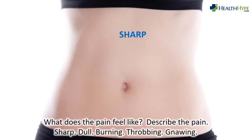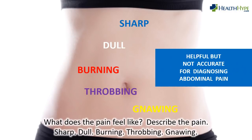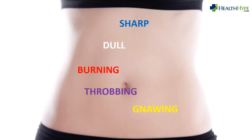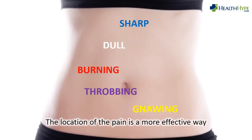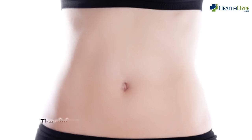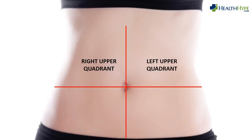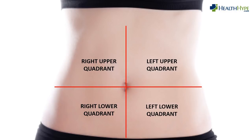We describe it in many ways using terms such as sharp, dull, burning, throbbing, and gnawing. However, trying to find the cause in this way is not very reliable or accurate. A more effective way to identify the possible cause of the pain is to isolate where the pain is located. The abdomen can be divided by imaginary lines into four separate quadrants, including the right upper, left upper, right lower, and left lower quadrants.